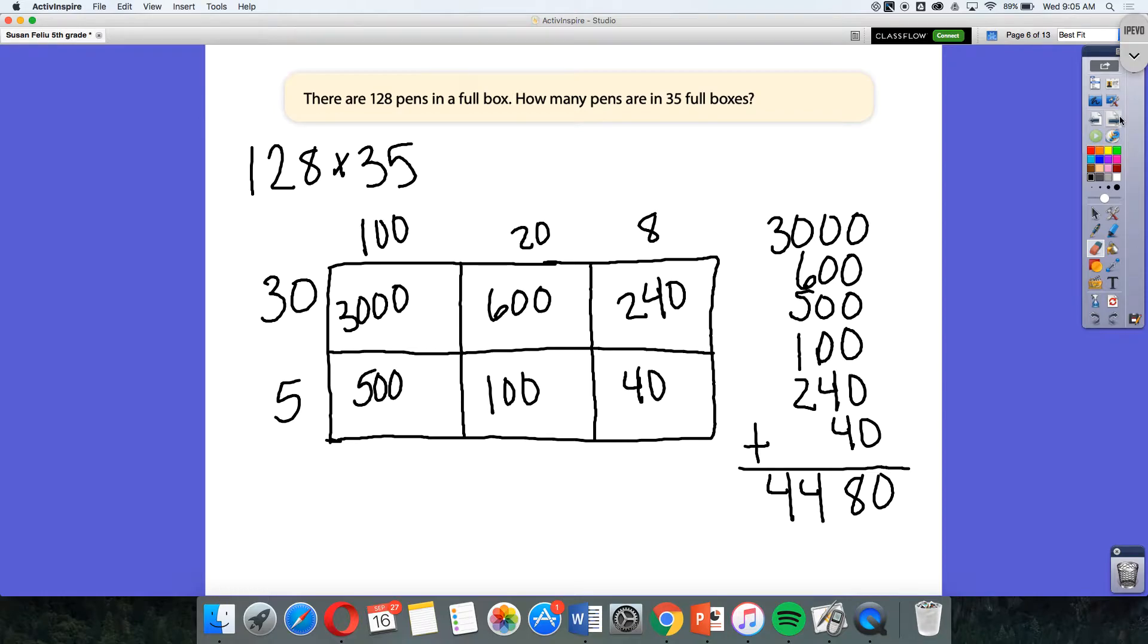And we're going to be multiplying 128 by 35. And so, this method probably looks very similar as it's something you did last year. And it's the area model for multiplication. And in order to get that, we use that place value by breaking apart 128. And then we broke apart that 35, thinking about it in expanded form, into 30 and 5. And we multiplied those numbers. And then we added them all up to get 4,480.